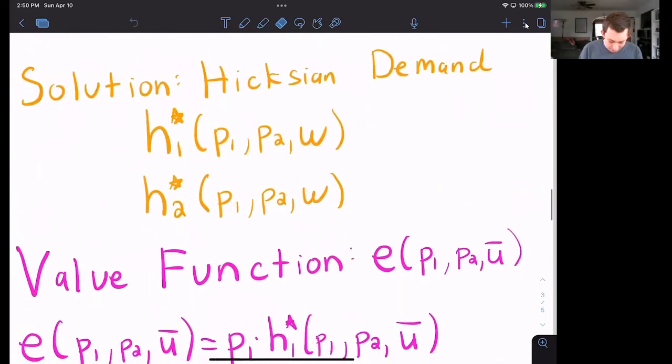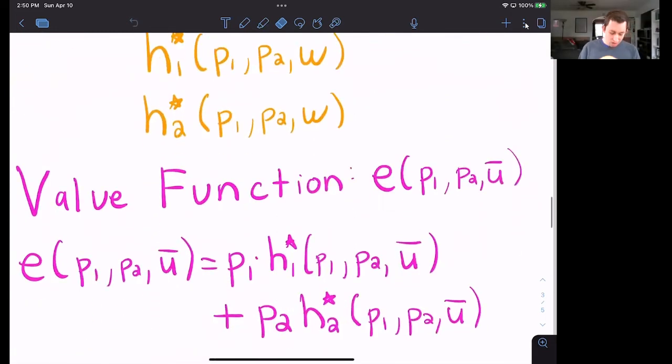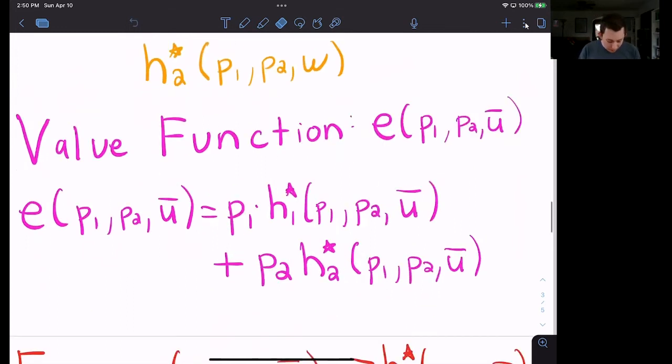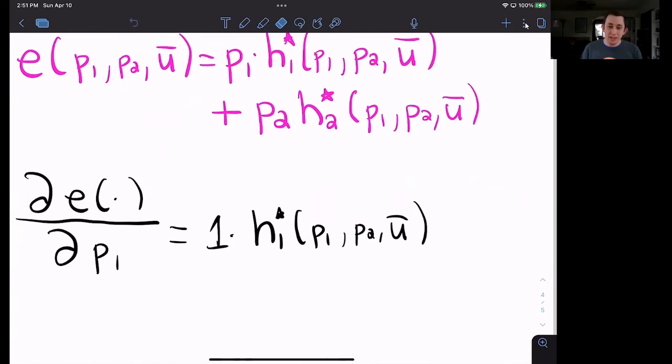And in that envelope theorem video, we set up the expenditure minimization problem and asked, how does the expenditure minimization problem change? How does the amount of money we spend at the grocery store change if the price of good one goes up? And we decided that that change was just equal to the Hicksian demand of good one.